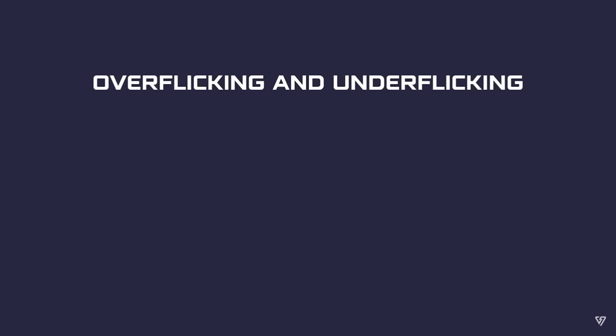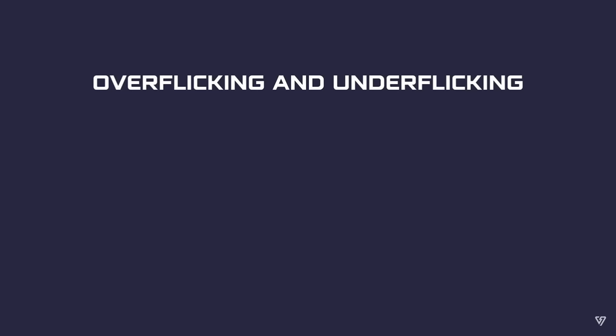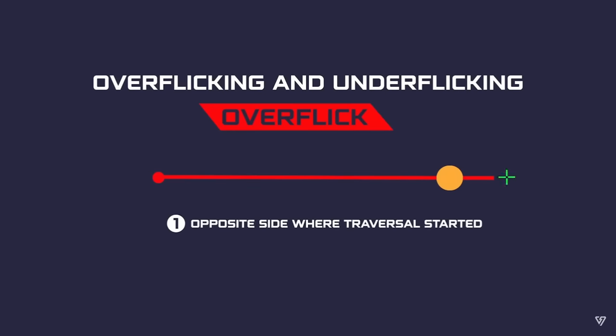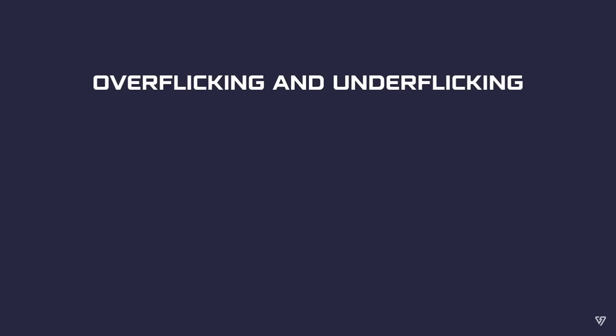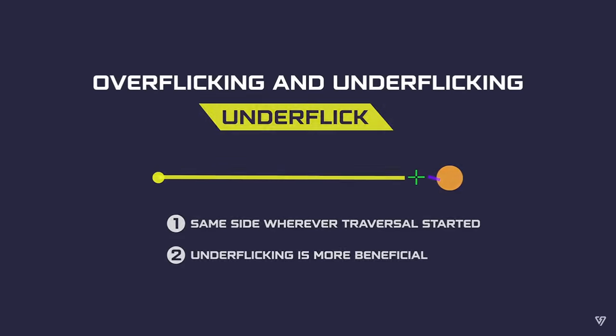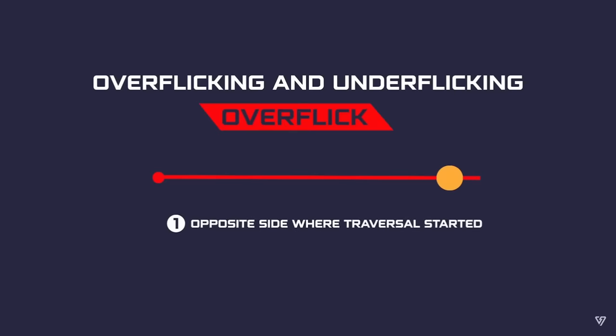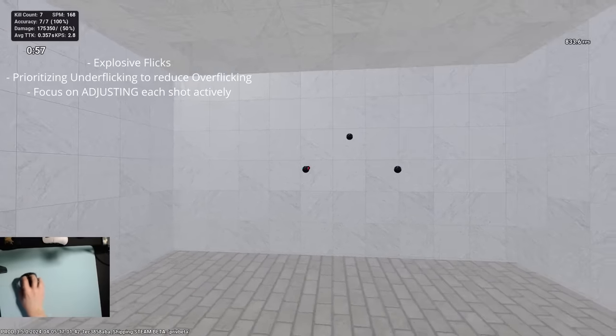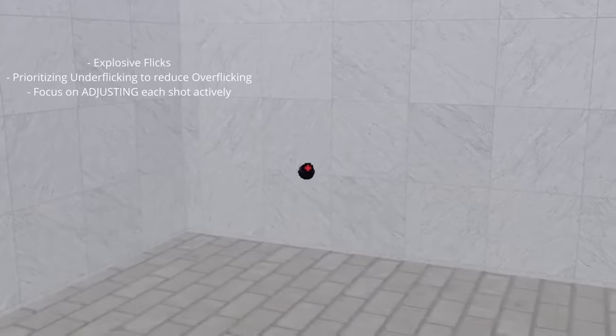What usually will happen when you start pushing your flicks is that you will most likely start over or under flicking. Ideally we would always want to hit our initial flick onto the target, but since it's really hard to do it consistently, we would want to prioritize either under or over flicking. Over flicking means traveling more distance than is needed between our crosshair and target, while under flicking means that our flick lands before the target in the same line that our motion started, meaning we are not adding unnecessary distance. That's why, while pushing our flicks with explosiveness, we want to prioritize under flicking in order to eliminate over flicks.